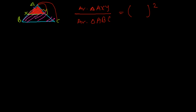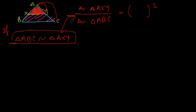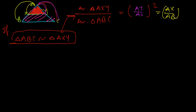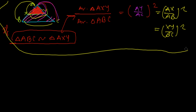This applies only if triangle ABC is similar to triangle XYZ. The corresponding sides give us: AY over AC squared, or AX over AB squared, or XY over BC squared. This is a theorem you need to learn in similarity of triangles: if two triangles are similar, then the ratio of their areas equals the square of the ratio of their corresponding sides.